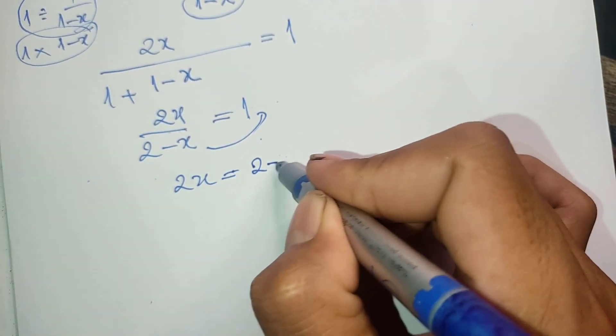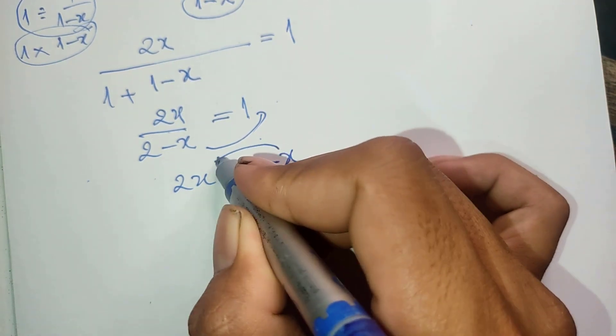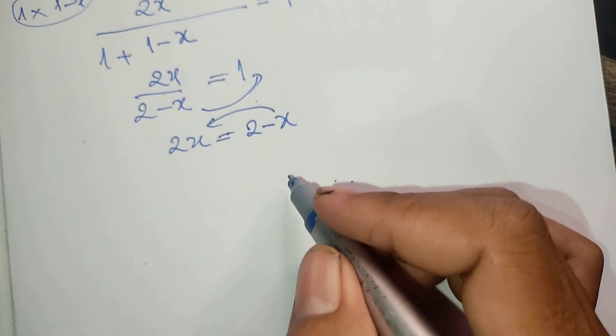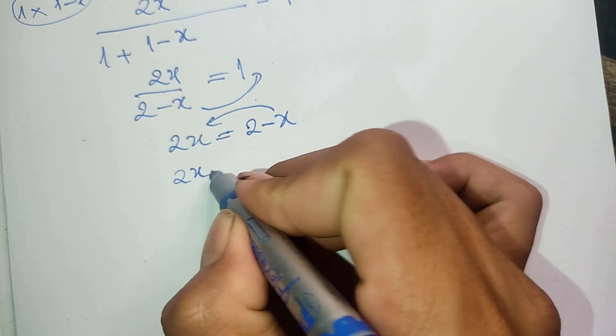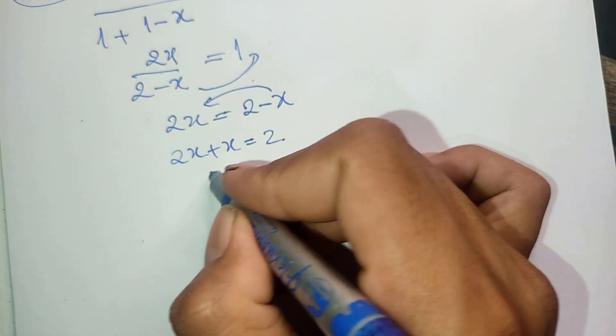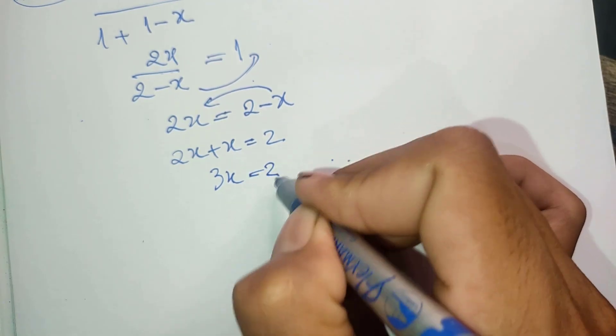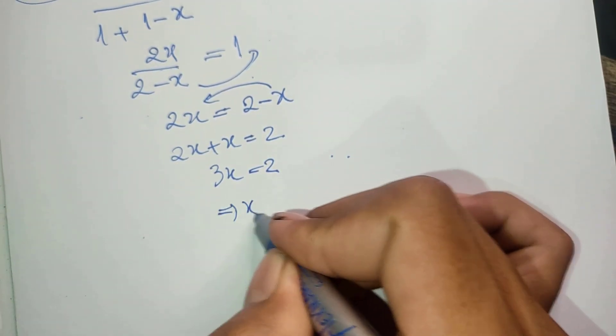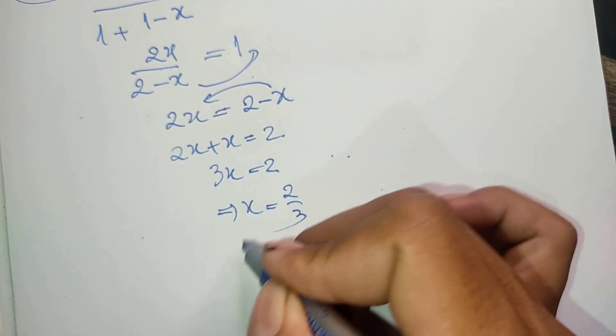And I take x from the right side to the left side. Get 2x and plus x equals 2. And this 3x equals 2. And now we get x is equal 2 divided by 3. This is our solution.